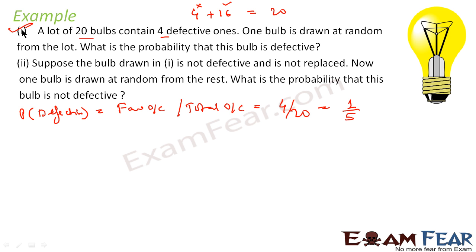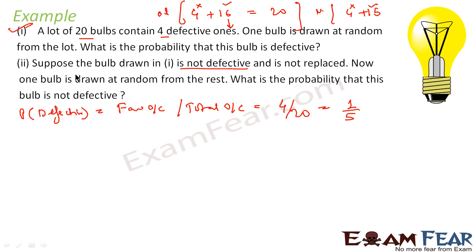The second part says: suppose a bulb is drawn and it is not defective, and it is not replaced. So one non-defective bulb is drawn and removed. The new scenario becomes: 4 defective bulbs still remain, plus only 15 good bulbs — because one good bulb was taken out. We are now left with 19 bulbs total, kept aside and not replaced.